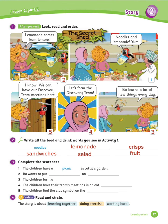Exercise number 3: Complete the sentences. Let's see the answers. Number 1 is done for you: The children have a picnic in Lutie's garden. Number 2: Boo wants to put lemonade on noodles.